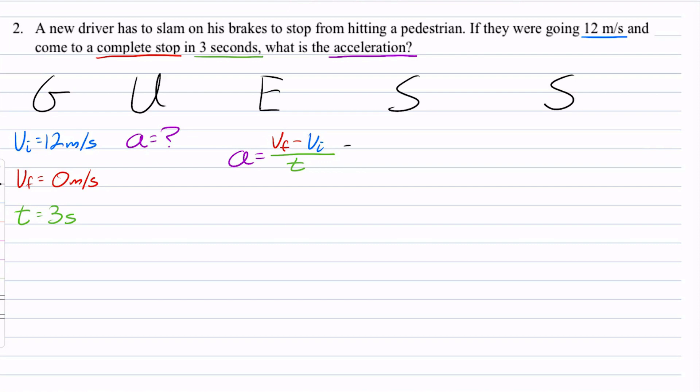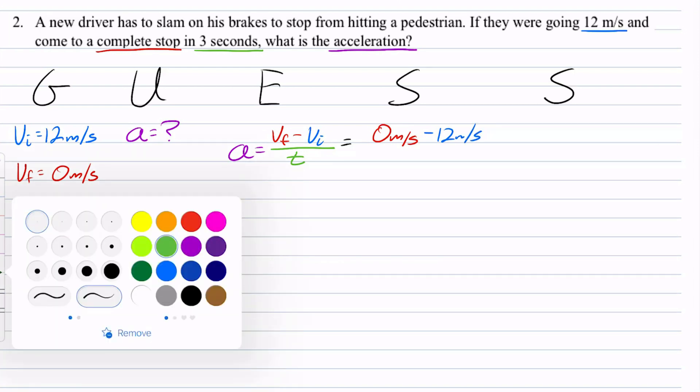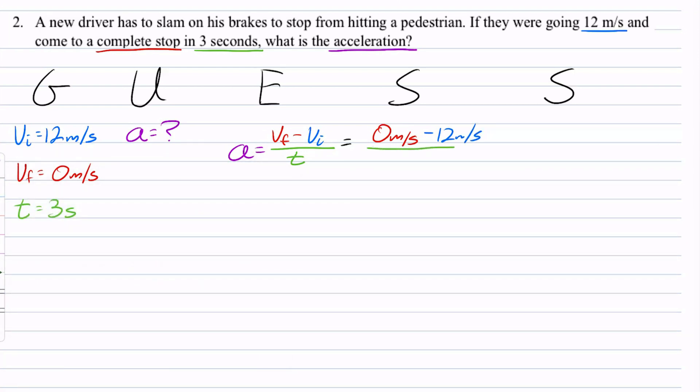I'm going to substitute in the numbers that I know. I know that V final is equal to 0 meters per second. And subtracting V initial of 12 meters per second. And that is what's going to be over 3 seconds.